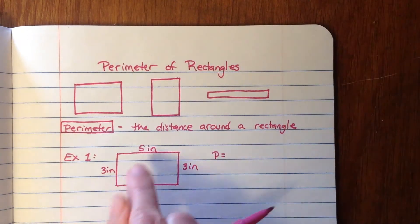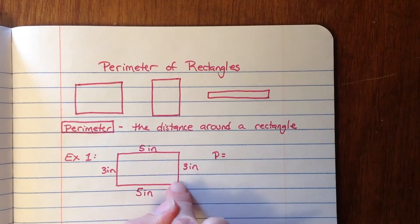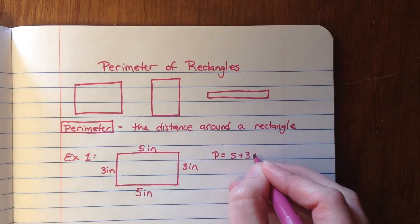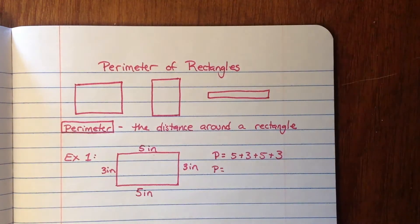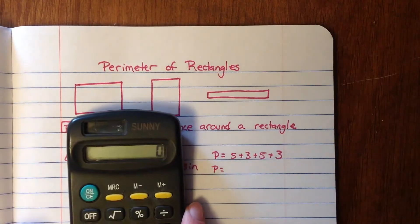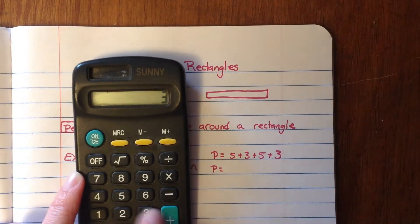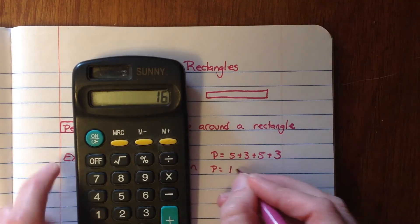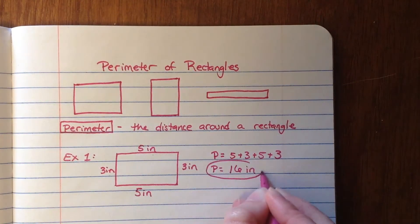I'm going to fill in those missing amounts. To find the perimeter — which we're going to call P — perimeter is just going to be all of these added together: five plus three plus five plus three, and that gives us the total distance around. You can use your calculator for that. Five plus three is eight, and eight plus eight is 16. So perimeter is equal to 16 inches — make sure you put the unit.